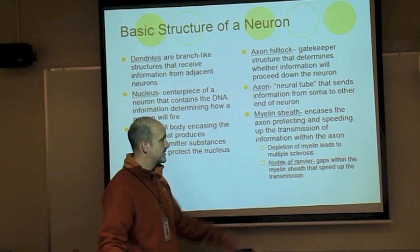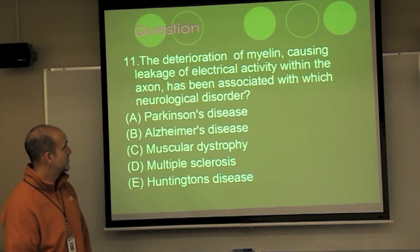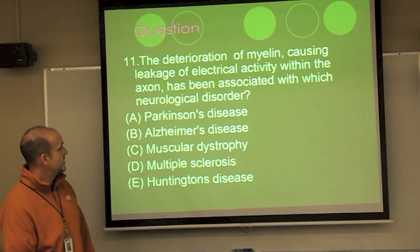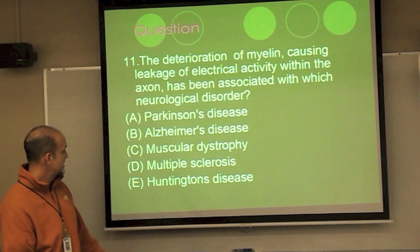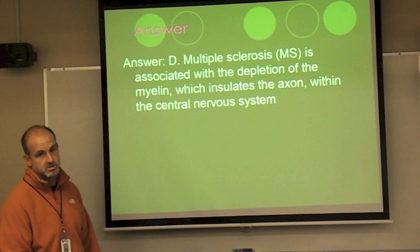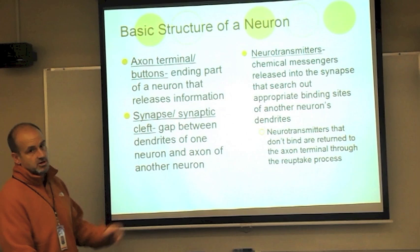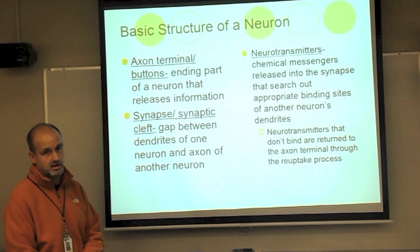If myelin sheath depletes, you can have multiple sclerosis. A typical test question: the deterioration of myelin causing leakage of electrical activity within the axon has been associated with which neurological disorder — Parkinson's, Alzheimer's, muscular dystrophy, multiple sclerosis, or Huntington's disease? The answer is multiple sclerosis. The axon terminal is the ending part of the neuron that releases information — very much like a terminal at an airport where the plane leaves the gate.